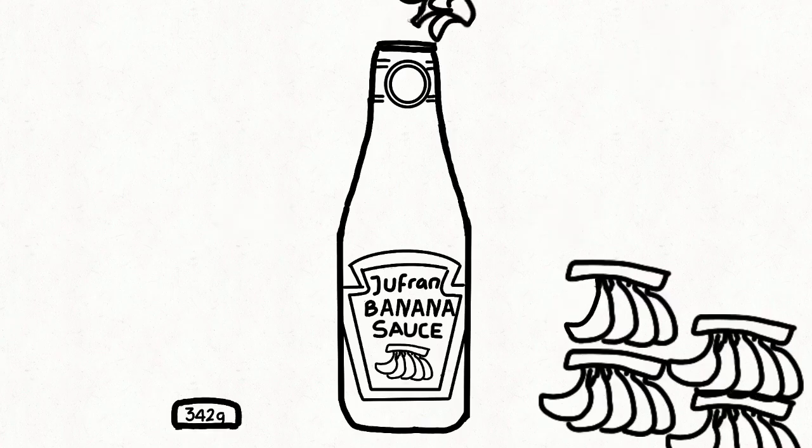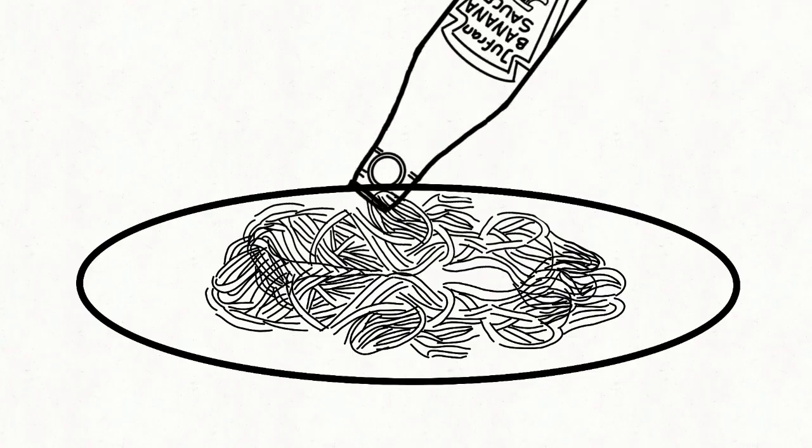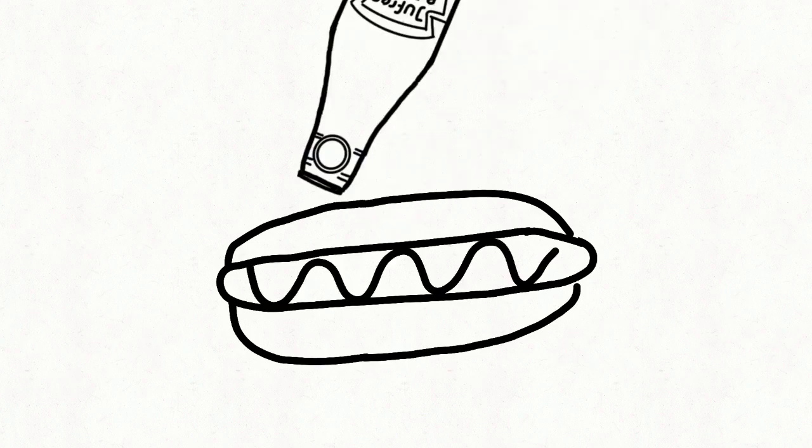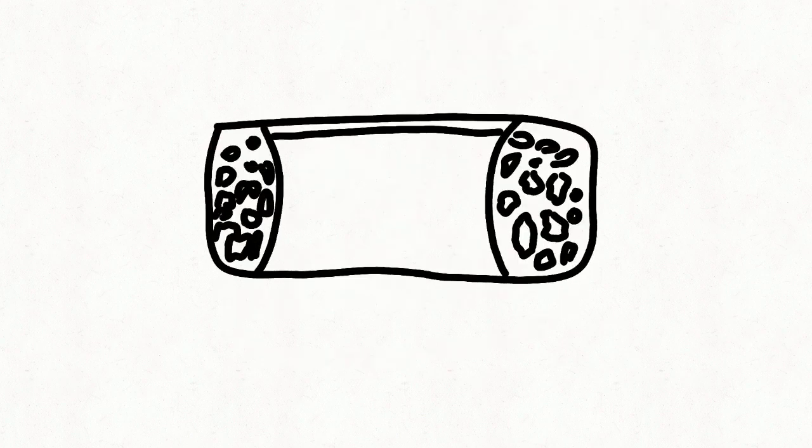Its natural color is brownish-yellow but it is often dyed red to resemble tomato ketchup. Banana ketchup was first produced in the Philippines during World War II due to a wartime shortage of tomatoes but a comparatively high production of bananas.